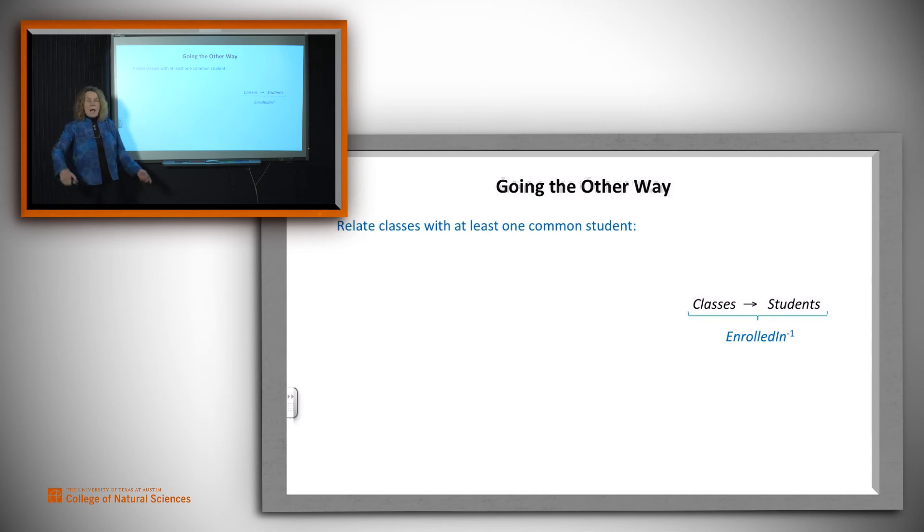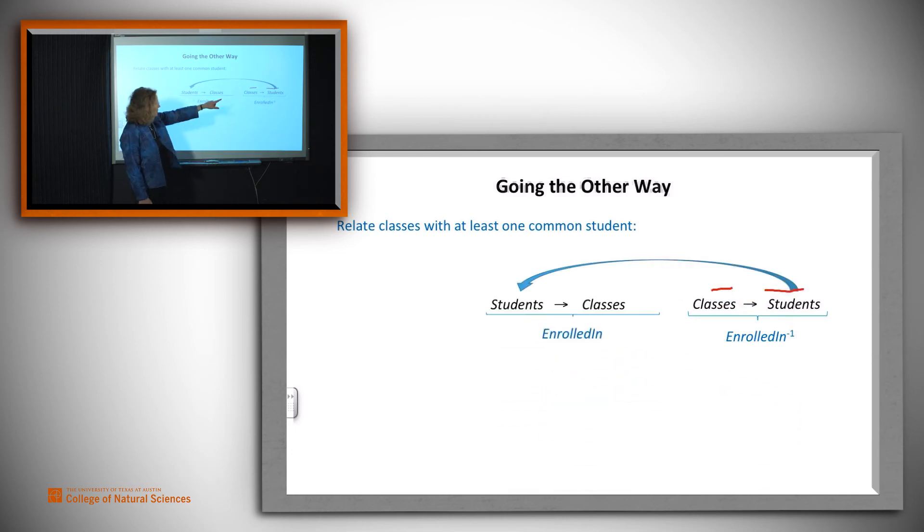So we've still got enrolled-in and enrolled-in inverse to work with. So what do we do? This time we're going to start with a class and map to a student, and then take the student, come back, and go the other way, student to classes. We do enrolled-in inverse first, and then enrolled-in because we want to start with classes.